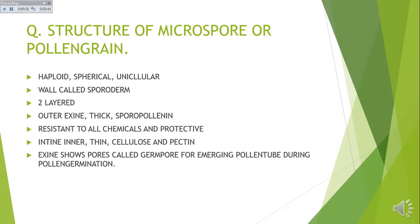This is a question which has been asked three to four times in board exams, and it is still present in the revised portion. The microspore is haploid — it has a haploid nucleus. It is mostly spherical and it is unicellular, meaning it is one cell.